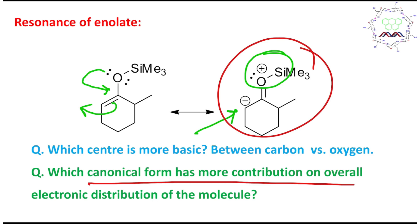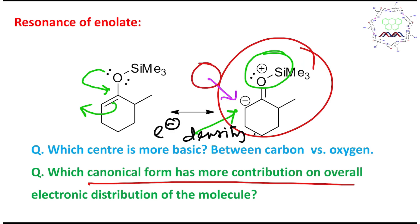But what does this charge separation indicate? It indicates that the electron density on this carbon is more. Consequently, you can expect the reaction to occur from this carbon center. If you compare basicity versus nucleophilicity, initially the oxygen center is expected to be more basic because of hardness. But in this case, the electron density is more on this carbon atom. So both basicity and nucleophilicity are observed on this alpha carbon. This is the background discussion.